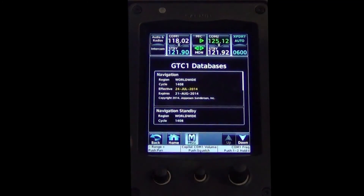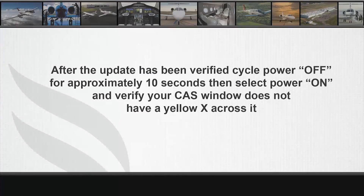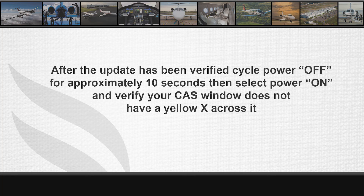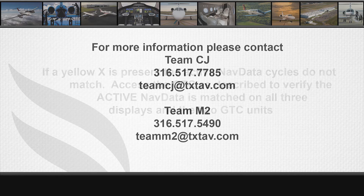If the database was only loaded to standby, verify the effective date to ensure the update was successful. After the update has been verified, cycle power off for approximately 10 seconds. Select Power On and verify your CAS window does not have a yellow X. If a yellow X is present, the active nav data cycle does not match. Access the GTC as described previously to verify the active nav data matches on all three displays and the two GTCs.